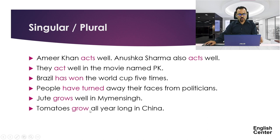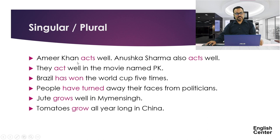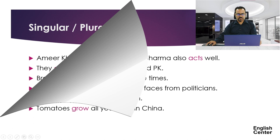People have turned away their faces from politicians — 'people' is plural number, so the verb will be plural too. Then: jute grows well in my country — jute is third person singular number so we add S with the verb. Tomatoes grow all year long in China — tomatoes is plural so we use a plural verb. Singular subject, singular verb; plural subject, plural verb.